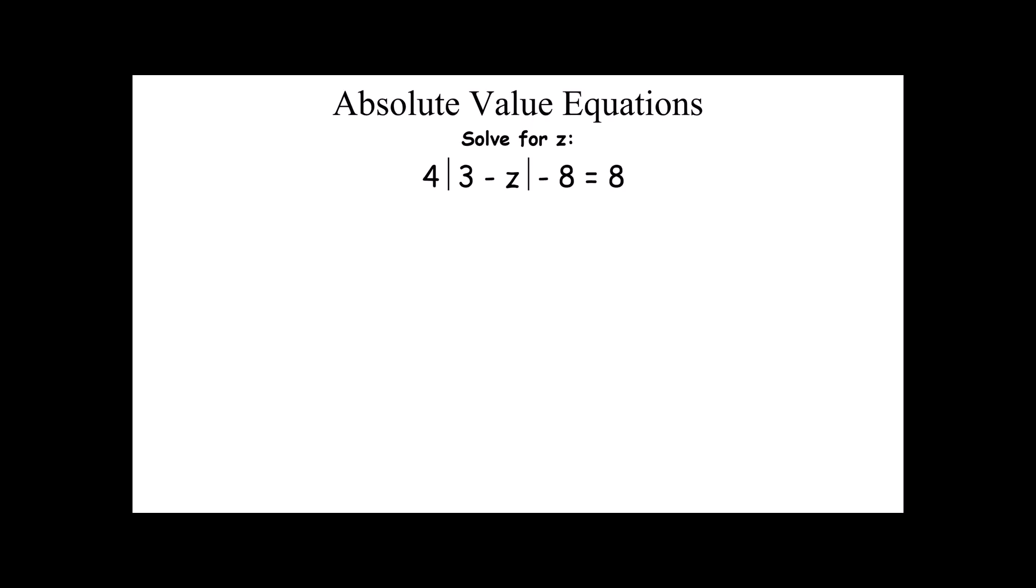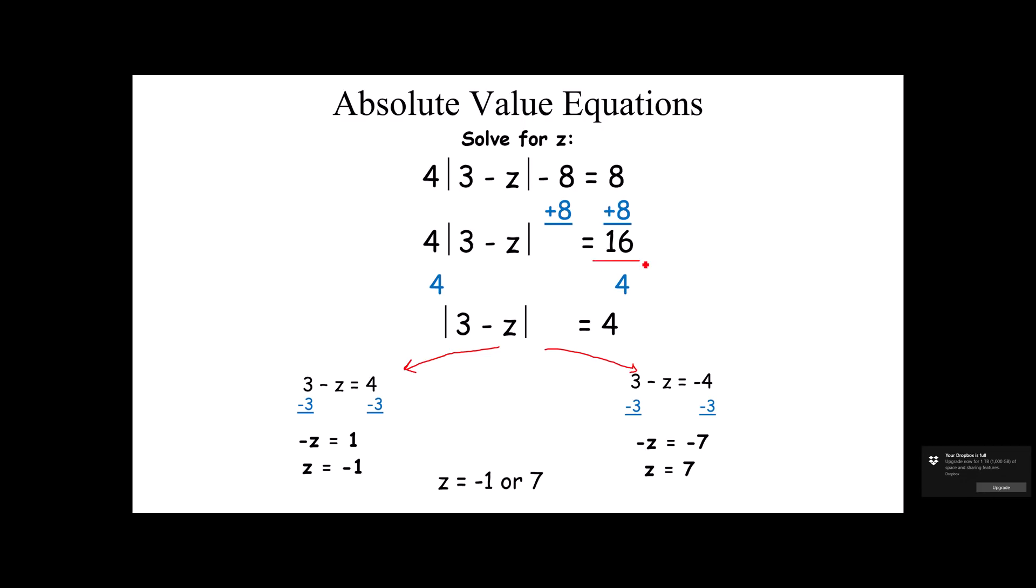Here's another one. I'd recommend pausing the video. I'm going to assume you've already worked this out, so I'm going to do it quickly. Add 8 to both sides, divide both sides by 4. I'm going to split that. Subtract 3 from both sides, divide both sides by negative 1. You end up with negative 1 or 7. Hopefully that gives you a pretty good idea of how this works.